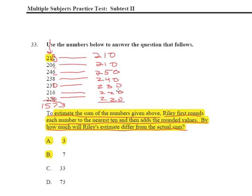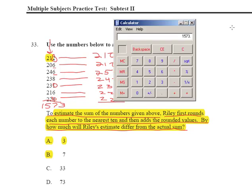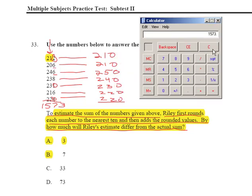Now all we have to do is add all those numbers together and then subtract. So let me break out my handy calculator and let's do that. So that's 210 plus 210 plus 250 plus 240 plus 230 plus 220 plus 220.